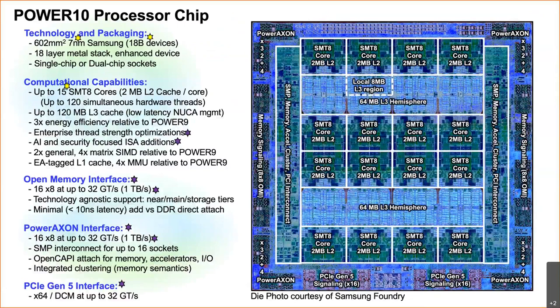Back to this chart — thread strength is going up, and we'll talk more about AI at the end. ISA is instruction set architecture: new instructions for new data types. The Open Memory Interface is absolutely vitally important for the next four years in the computer industry. PowerXeon is the SMP interconnect — the interface between Power 10 chips to make it look like one big computer, communicating between chips. And PCIe Gen 5 interface versus Power 9's Gen 4: each generation doubles the bandwidth out to the adapter, so it's quite a big jump in performance.